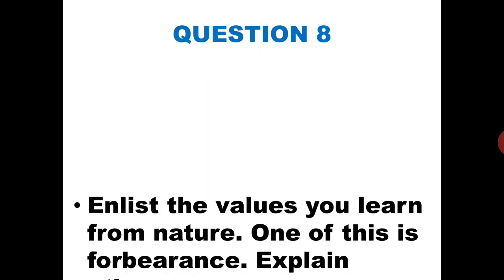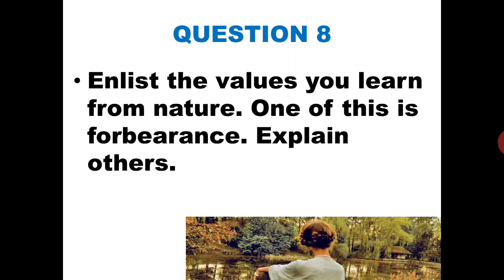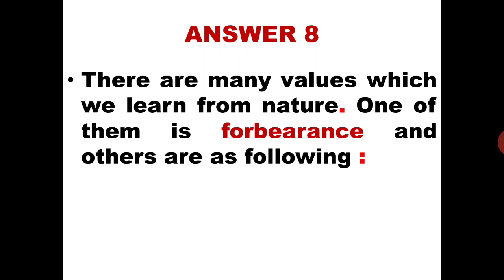Now question 8. And what is question 8, students? This is a HOT question: List the values you learn from nature. One of them is forbearance — explain others. So forbearance means patience, tolerance — how patiently we are working. This is one value which nature has taught us. Now we have to explain the other values which we have learnt from nature. The answer is: there are many values which we learnt from nature. One of them is forbearance, and the others are as follows.